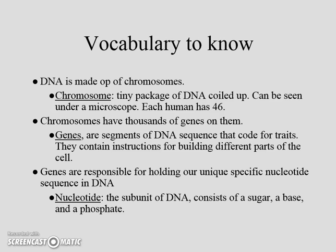Chromosomes have thousands of genes on them, and genes are segments of DNA. They sequence a certain code, which creates a trait. Traits are different characteristics that we have — different color hair, our features. Our genes contain those instructions for building different parts of the cell and giving us traits.